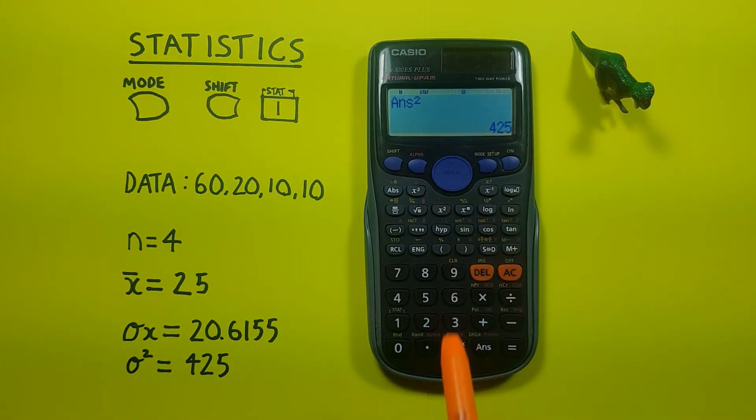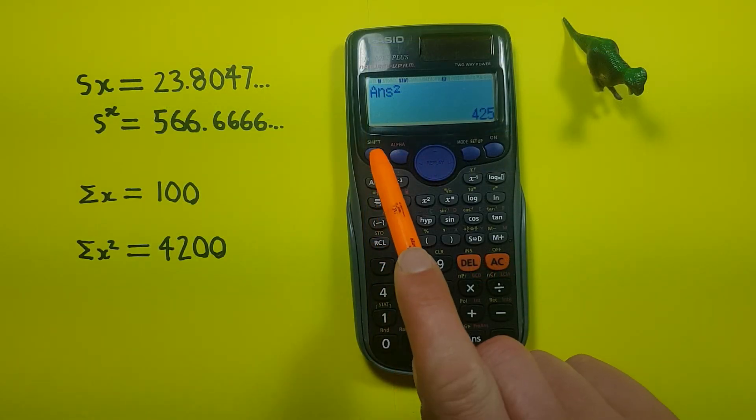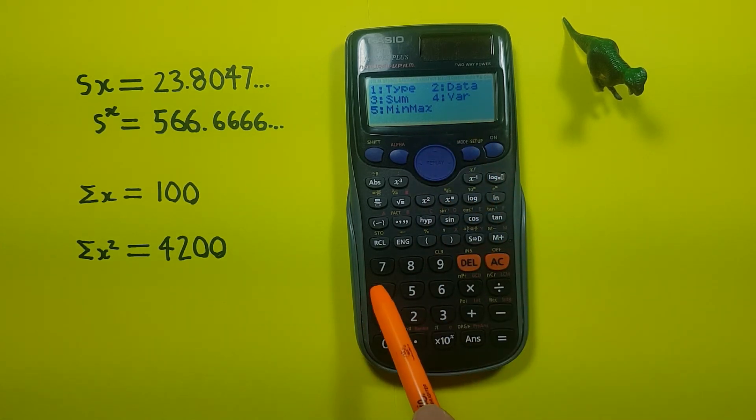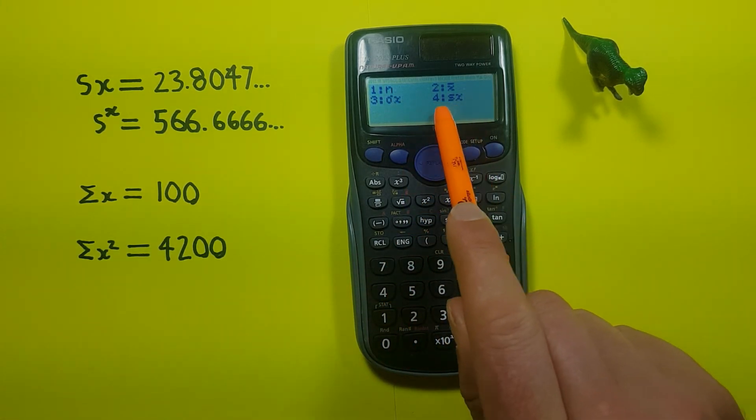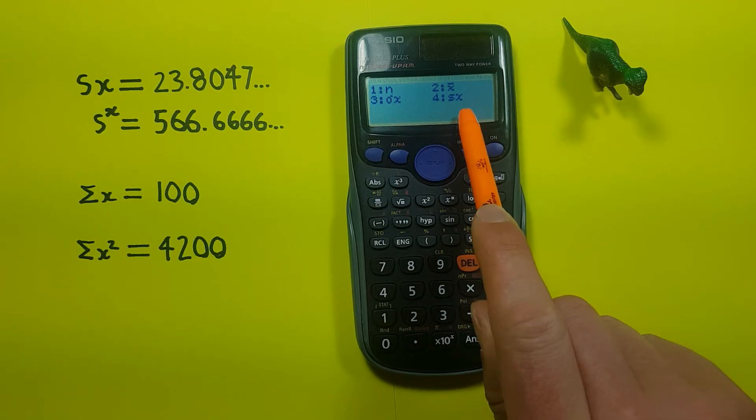Next, we can get our sample standard deviation by going shift 1 into variables, number 4, and choosing 4 in this menu with the large σx or sample standard deviation.